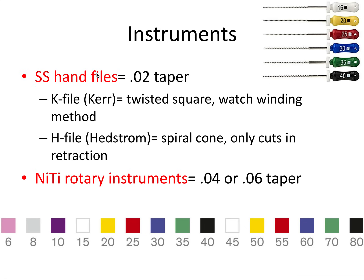Stainless steel hand files have a 0.02 taper and come in two subtypes. The first is the K-file or Kerr file, which has a twisted square shape and is often used with a watch-winding method — a back-and-forth clockwise and counterclockwise rotation as if winding an analog watch. There's also the H-file or Hedström file, which has a spiral cone shape and only cuts in retraction when pulling the file outward. It has a teardrop cross-section, as even mentioned in Finding Nemo.